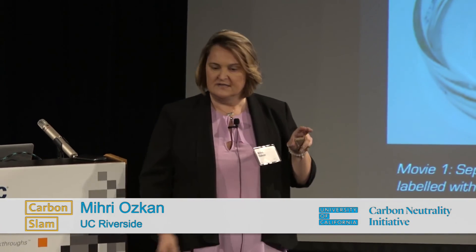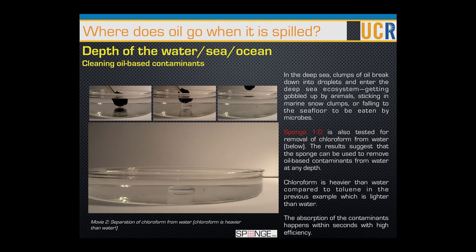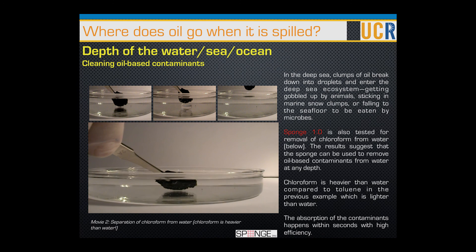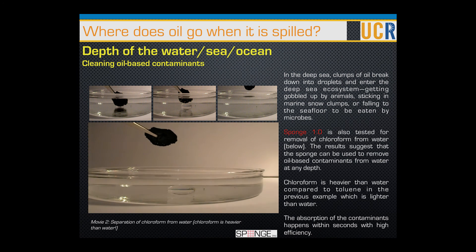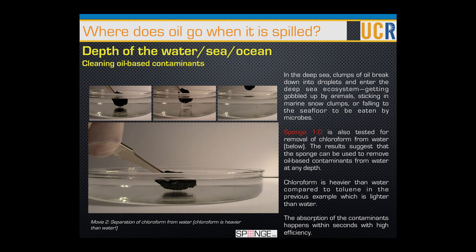But oil spills don't just remain on the surface — some of them actually go under the water. That's why we had to find a way of cleaning oil spills or oil contaminants inside the depth of the ocean too. So we made sure our material works at depth as well. This particular oil contaminant is being cleaned using our sponge material even while it is at the bottom of the beaker.